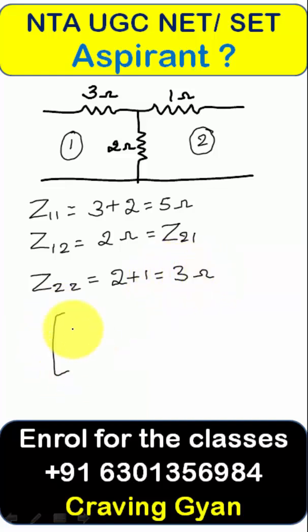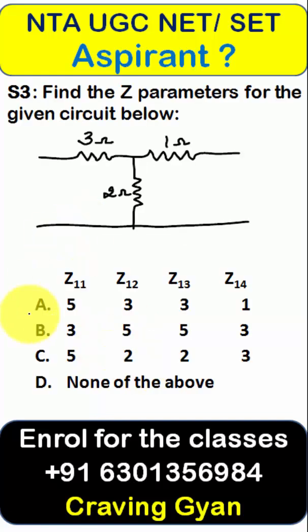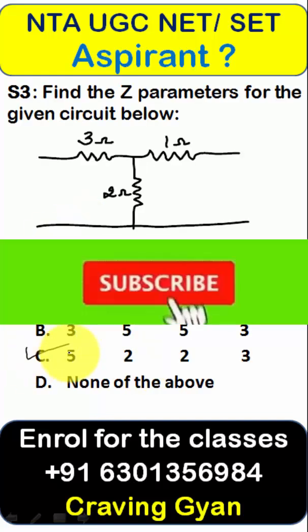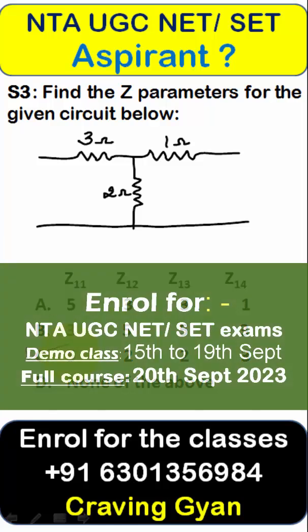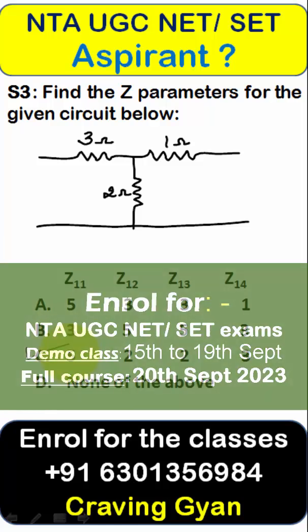So writing it as a matrix, it is [5, 2; 2, 3] — nothing but option C. Follow and subscribe for more videos, and don't forget to enroll for the class session starting from the 15th of September.